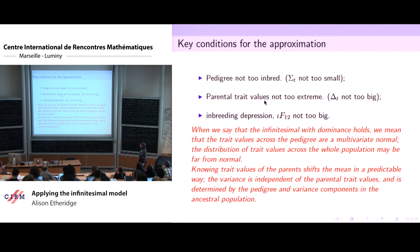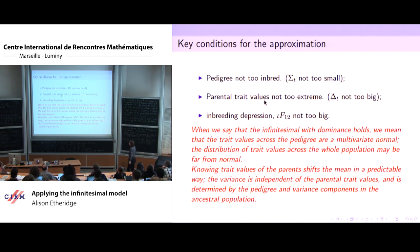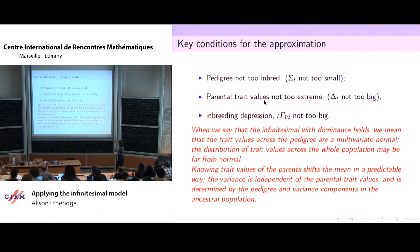To finish my bit: when we say that the infinitesimal with dominance holds — which we're now willing to say with 90% of the paper actually written and we believe it 99.9% — what we mean is that the trait values across the pedigree are a multivariate normal. The distribution of trait values across the whole population may not be normal. Knowing the trait values of the parents shifts the mean of their offspring in a predictable way, the variance is independent of the parental trait values, and it's determined by the pedigree and variance components in the ancestral population.